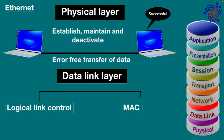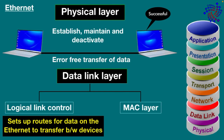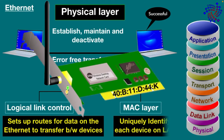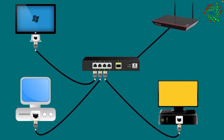The data link layer basically has two sub-layers: Logical Link Control and the MAC layer. LLC sets up routes for data on the Ethernet to transfer between devices. The MAC layer uses hardware addresses that are assigned to the network interface card, which uniquely identify each device that resides on the local area network.